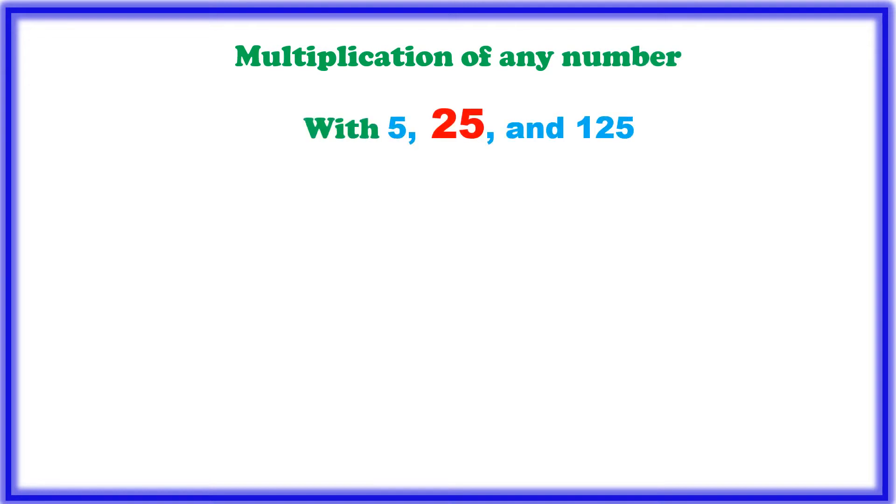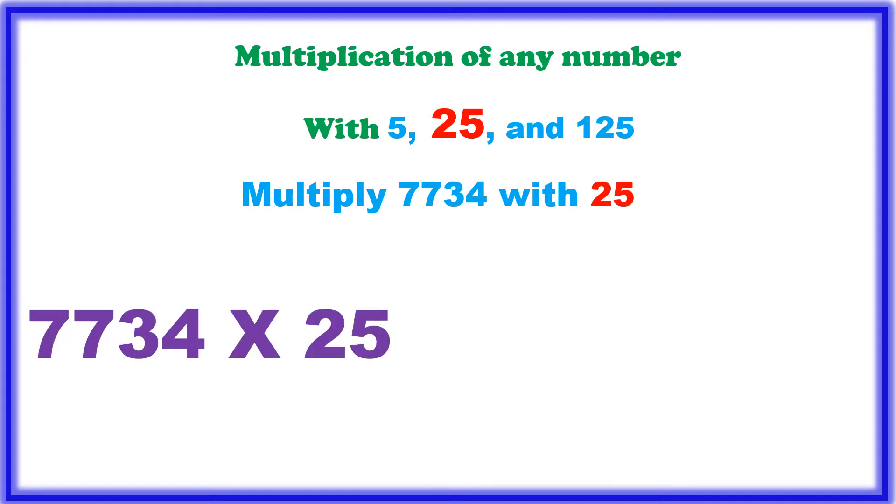We will try one more number, that is multiply 7,734 with 25. So 25 is nothing but 100 by 4 and then 7 is, the first number 7 is divided by 4, 1 time and left over number is 3, 37, 4, 9 jar, 36, 1 is left and 13.